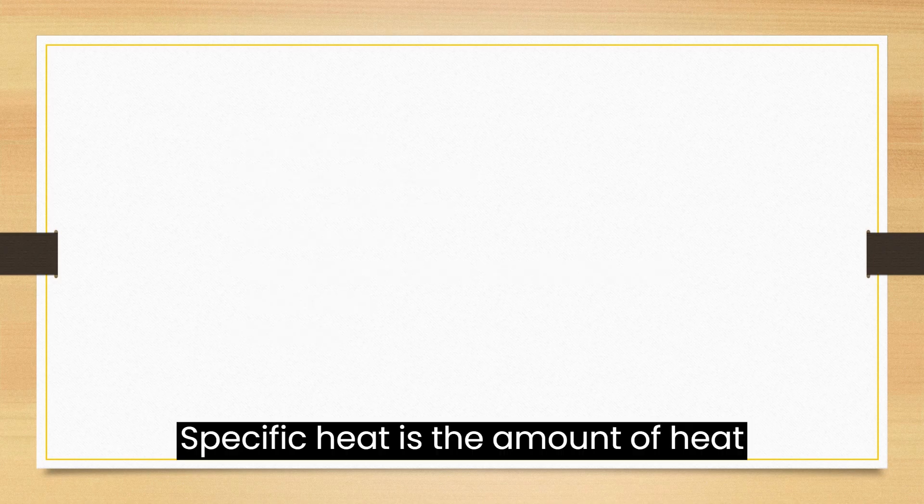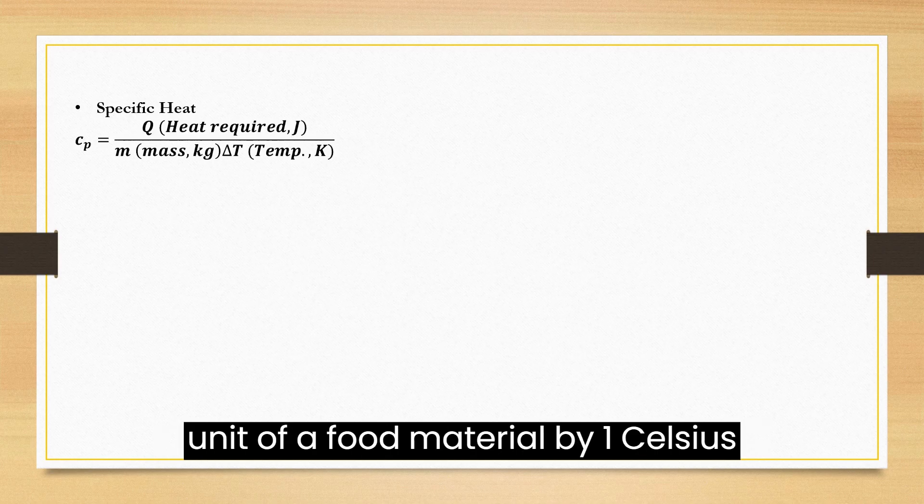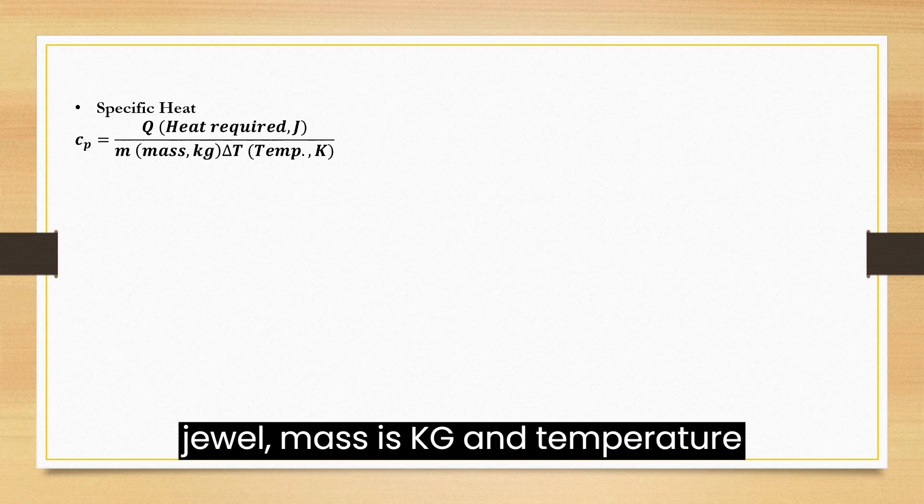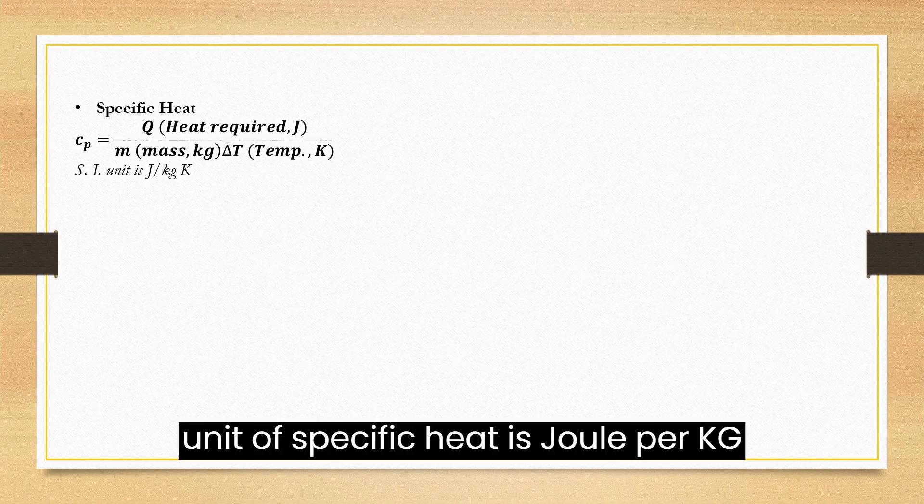Specific Heat is the amount of heat required to raise the temperature of one unit of a food material by one Celsius degree. The SI unit of heat is Joule, mass is kg, and temperature is Kelvin. Therefore, the SI unit of specific heat is Joule per kg per Kelvin.